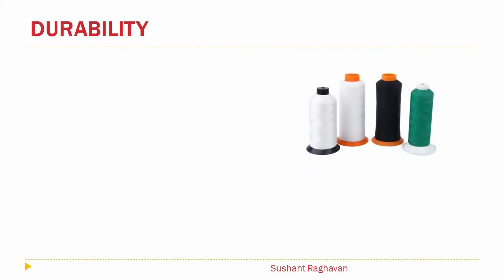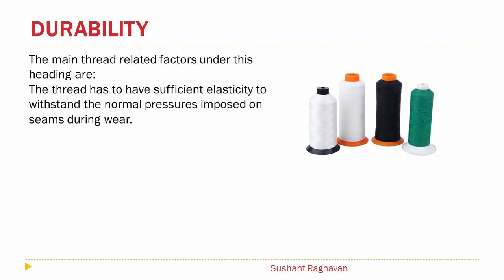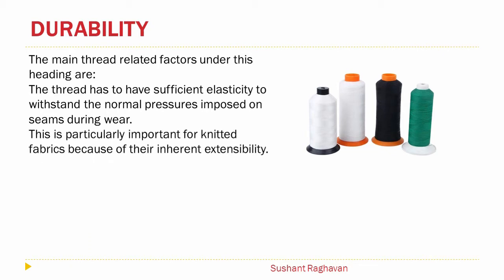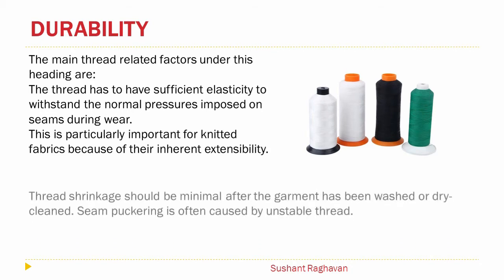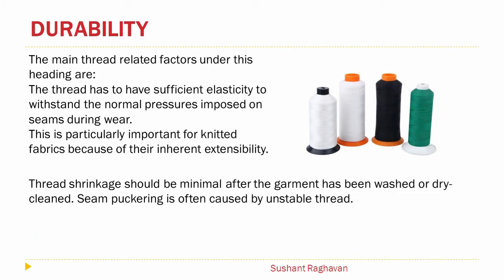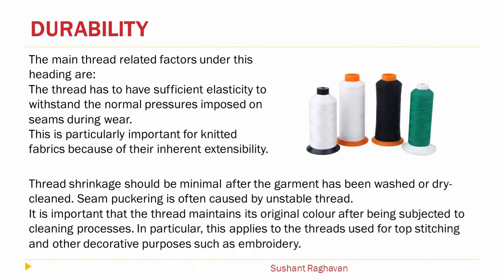Durability. The main thread-related factors under this heading are: the thread has to have sufficient elasticity to withstand the normal pressures imposed on seams during wear. This is particularly important for knitted fabrics because of their inherent extensibility. Thread encasement shrinkage should be minimal after the garment has been washed or dry cleaned, as seam puckering is often caused by unstable thread. It is also important that the thread maintains its original color after being subjected to cleaning processes — particularly for threads used in top stitching and other decorative purposes such as embroidery.